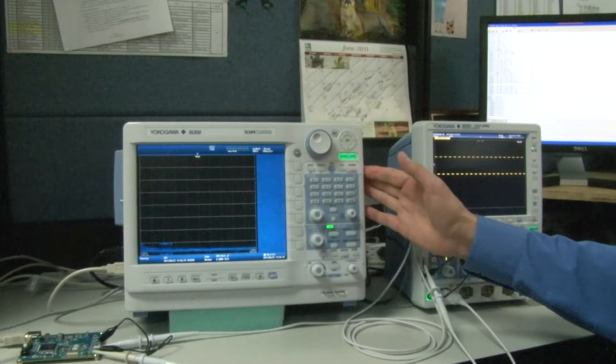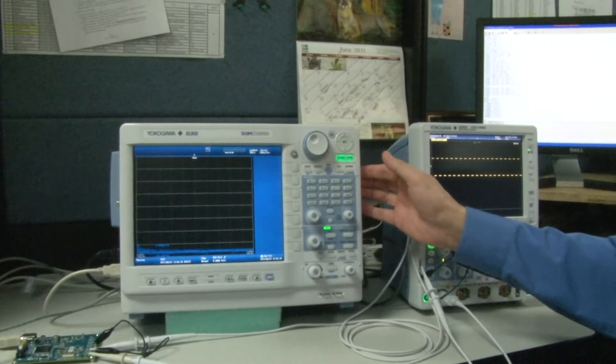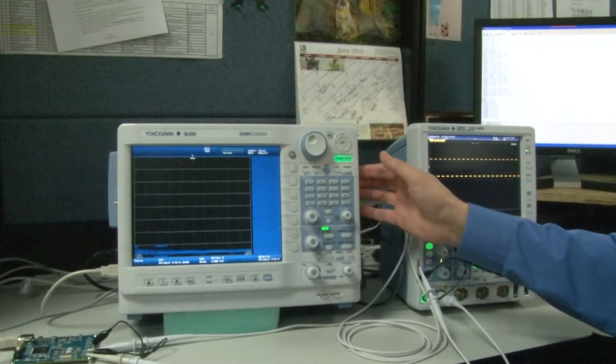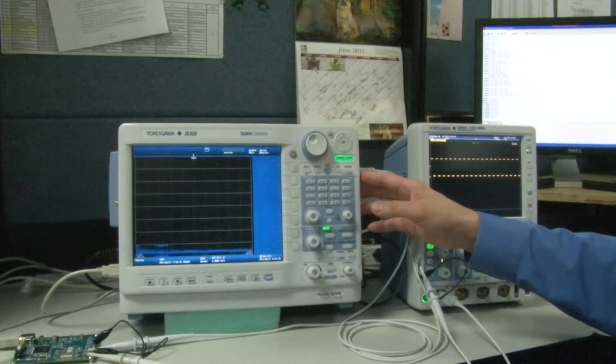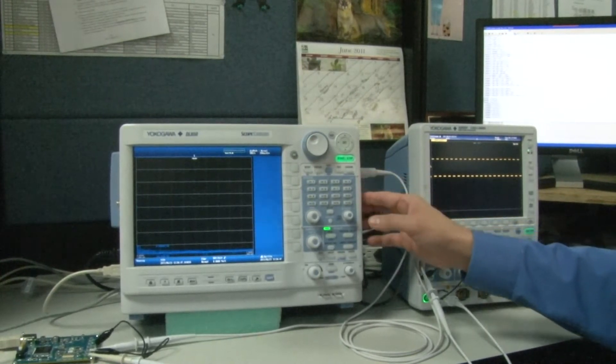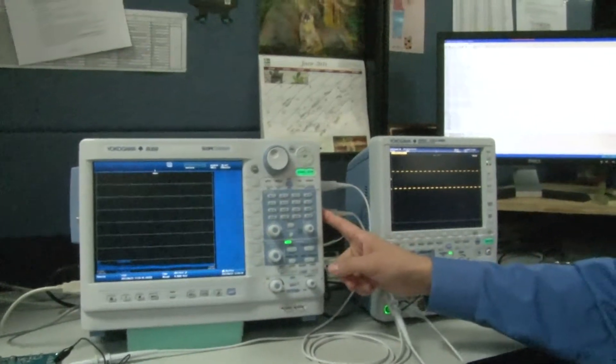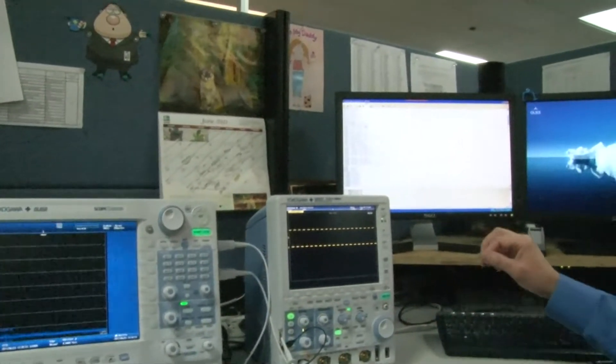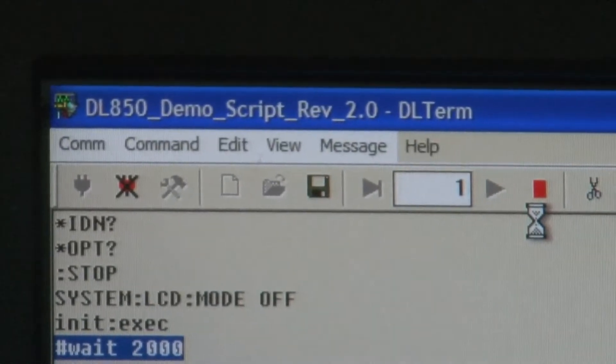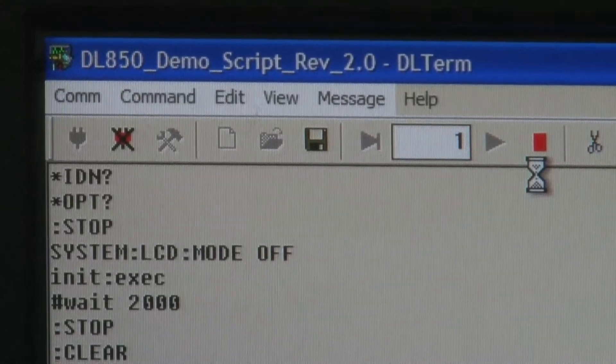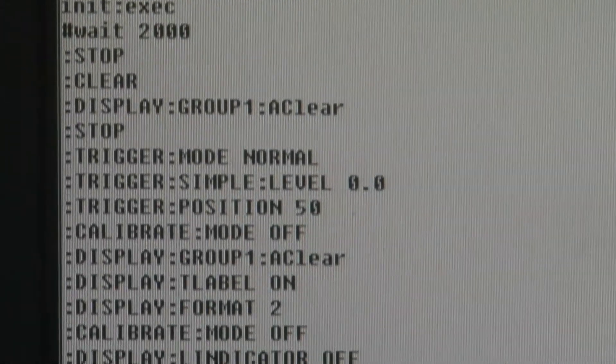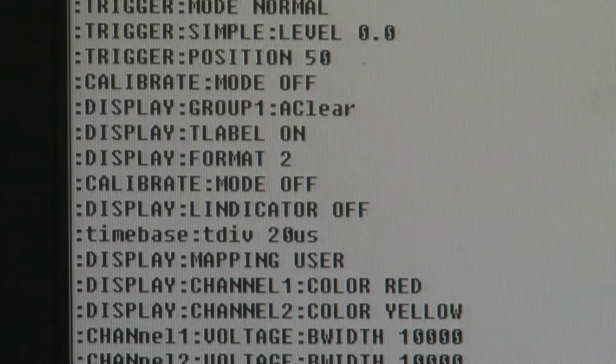We call it a scope corder because it has both the characteristics of a scope for short term or faster measurements, and also characteristics of a recorder in the same instrument, so it's very versatile. I have a software here that I've pulled up on the screen, and this software is called DL-Turn. It basically allows me to transmit one line at a time SCIPI commands via Ethernet over to the DL-850.